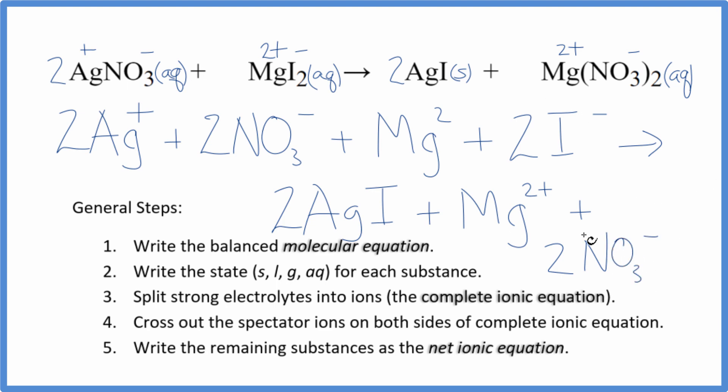So this is the complete ionic equation. Now we can cross out the spectator ions. They're on both sides. If I look at the reactants and the products, in the reactants I have two nitrate ions. In the products, I also have two nitrate ions. Those are spectator ions. Get rid of those. I have this magnesium 2+ ion here and in the products. So I can cross that out as well. Spectator ions.